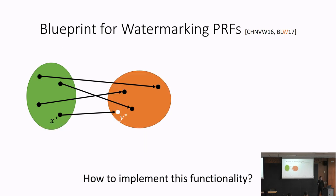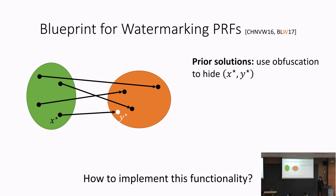The question is how we actually implement this functionality — we need some way of enforcing that the adversary, given the description of the code of the marked program, cannot figure out what x* and y* are. All prior solutions use indistinguishability obfuscation to hide x* and y*. Obfuscation scrambles the code of a program to hide its secrets.